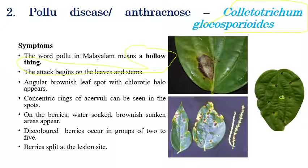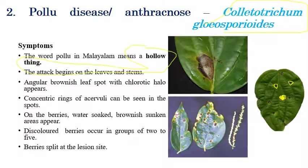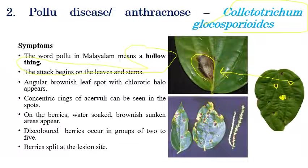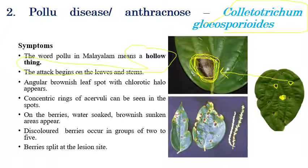On leaves, initially small brown angular spots with a chlorotic halo can be seen. In advanced stages of disease development, these spots coalesce and form very large angular brown leaf spots. Concentric rings indicate the presence of acervuli.